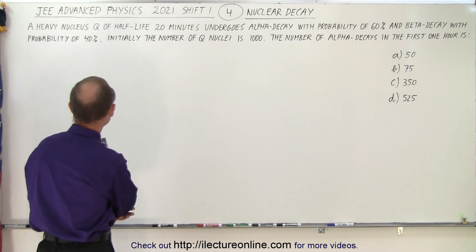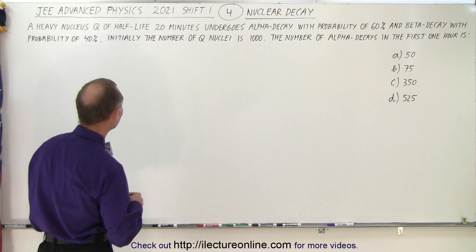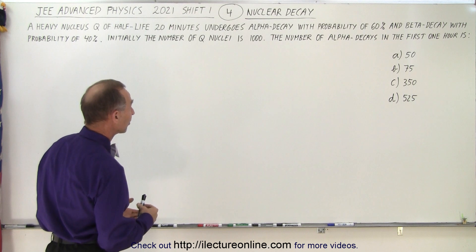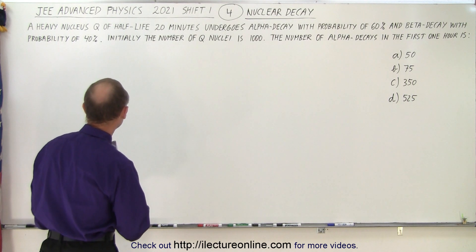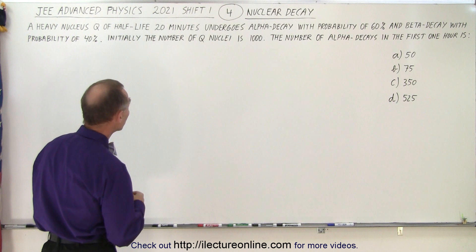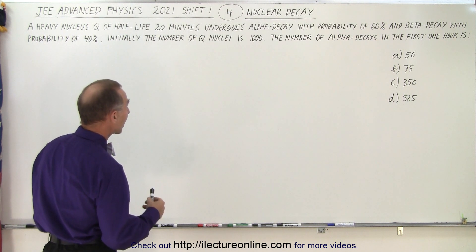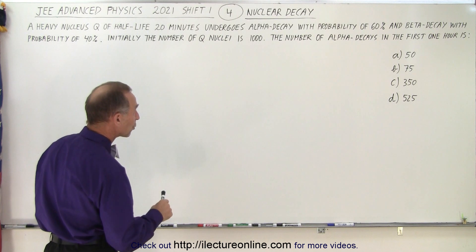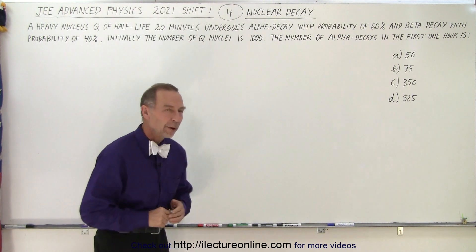The problem reads: a heavy nucleus Q of half-life 20 minutes undergoes alpha decay with probability of 60% and beta decay with probability of 40%. Initially the number of Q nuclei is 1000. The number of alpha decays in the first one hour is, and they give us four possible answers.